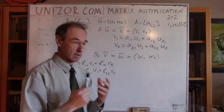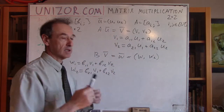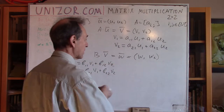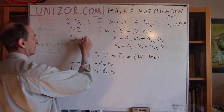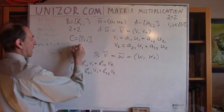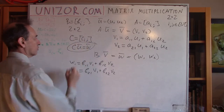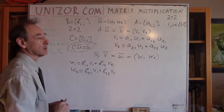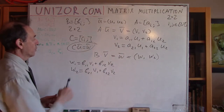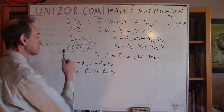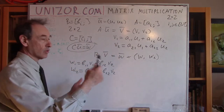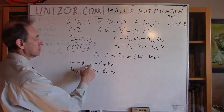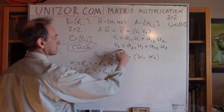What I was talking about before is the relationship between W and U. Can I get in one linear transformation from U to W? If I can, that would be some matrix C such that C applied to U gives me W. If I find this matrix of linear transformation which converts U into W, then this matrix must actually be called the product of A and B — or B and A, depending on convention.